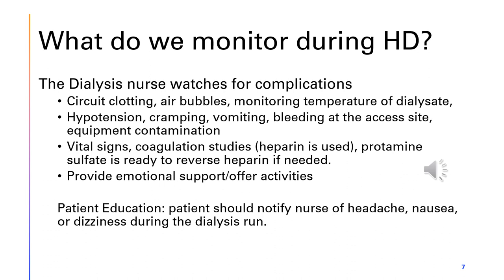Most dialysis nurses will let you know if the patient is feeling nauseous or have the patient push a call button if they're alert. We are also watching vital signs — we don't want the patient to get hypotension. We're making sure their blood pressure, if they had hypertension ahead of time (which is normal for a dialysis patient), is starting to come down gradually and not dropping quickly. Dialysis nurses will monitor coagulation studies if heparin is used, and they always have protamine sulfate ready in case they need to reverse the heparin.